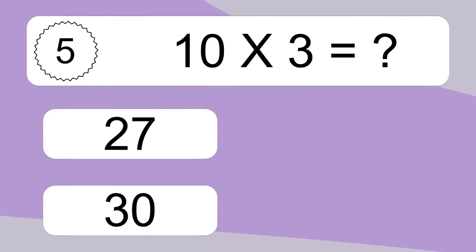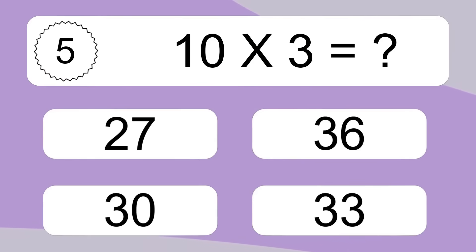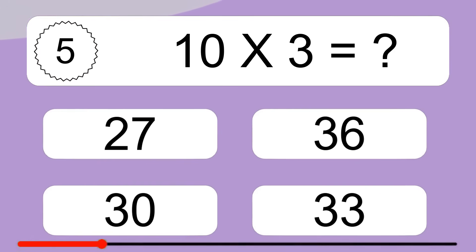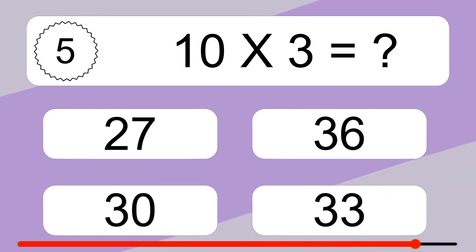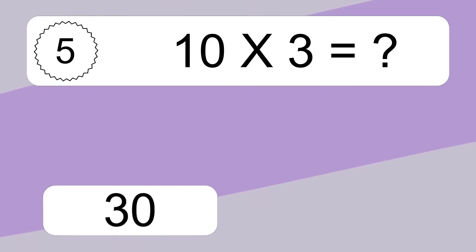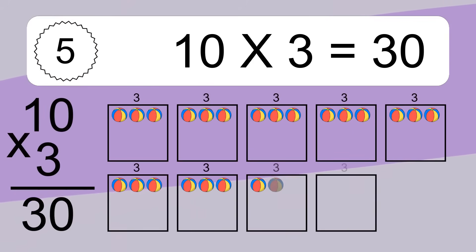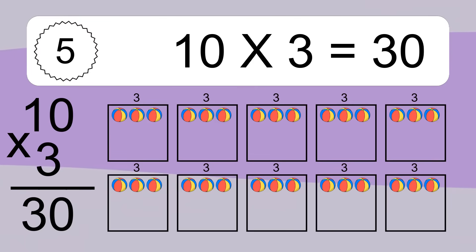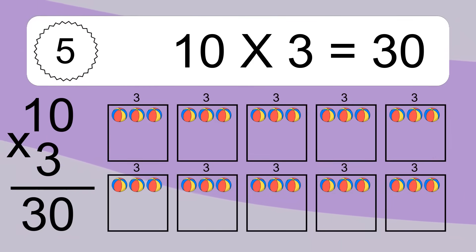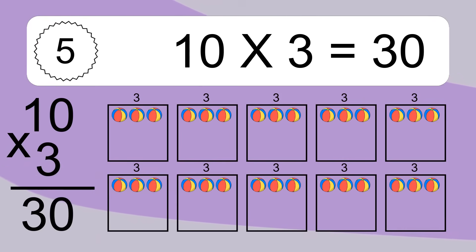10 times 3 equals what? 10 times 3 equals 30. We have 10 boxes and each box has 3 colorful balls inside. If you count all the balls in all the boxes together, you will have 10 times 3 balls. This equals 30 balls.